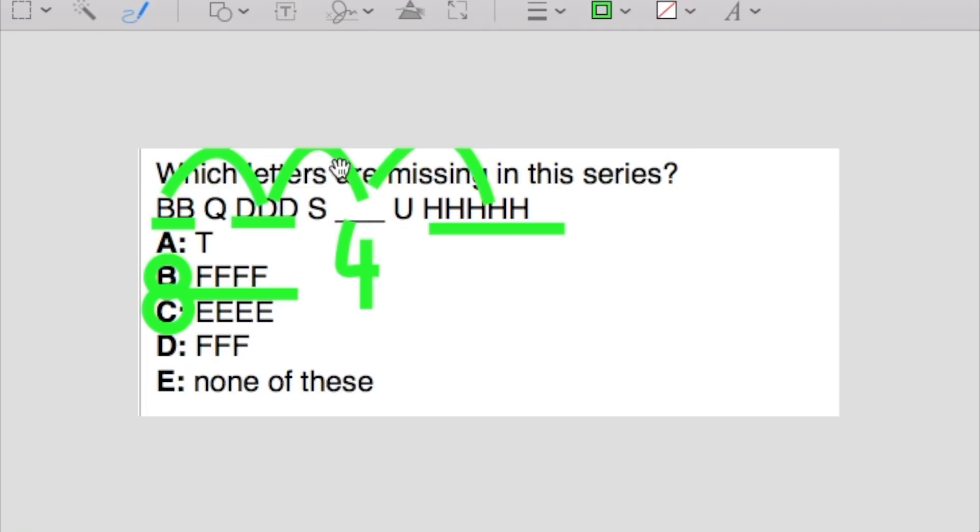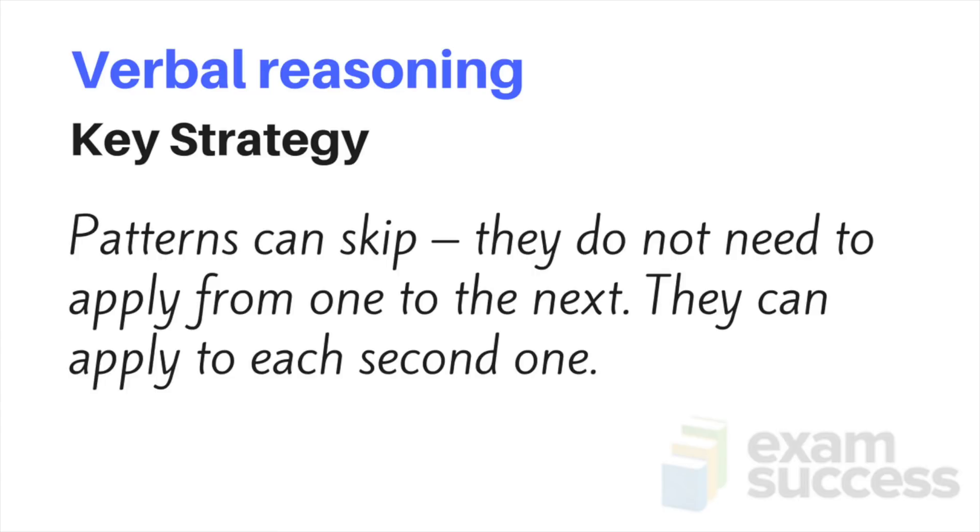So what's the key strategy for verbal reasoning? That patterns can skip. They do not need to apply from one to the next. They can apply to each second one.